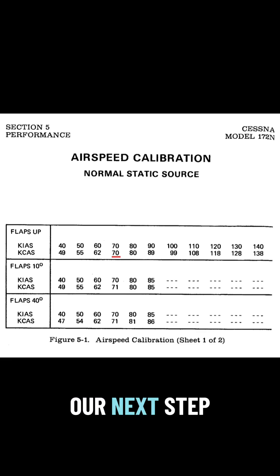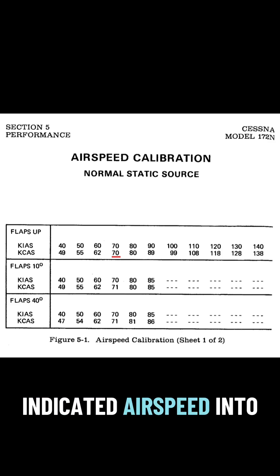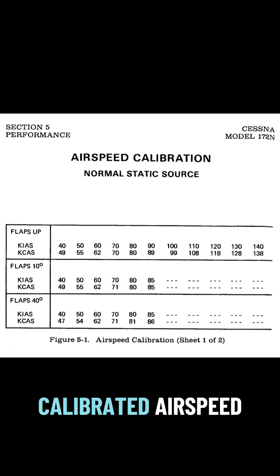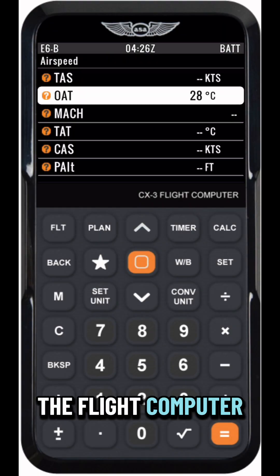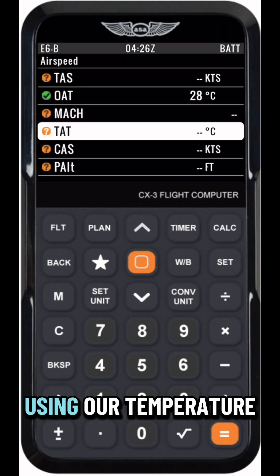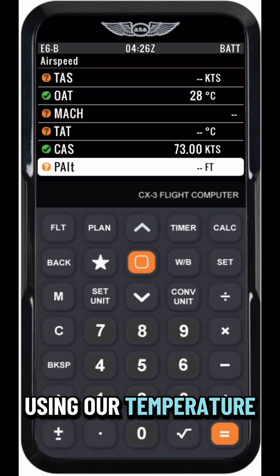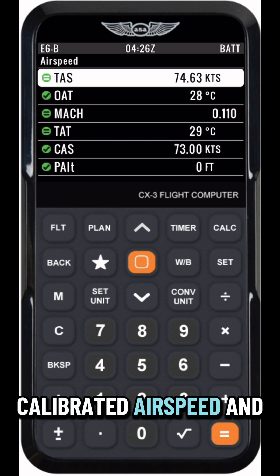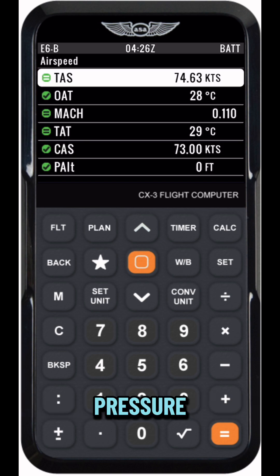Our next step is to convert indicated airspeed into calibrated airspeed. Next, we'll use the flight computer to get TAS using our temperature, calibrated airspeed, and pressure.